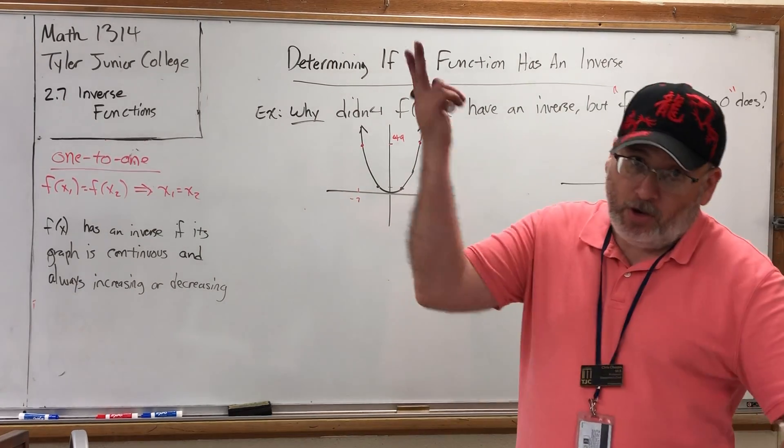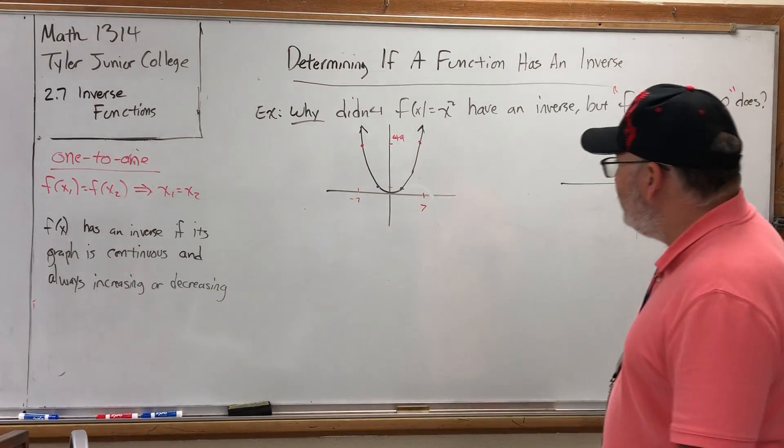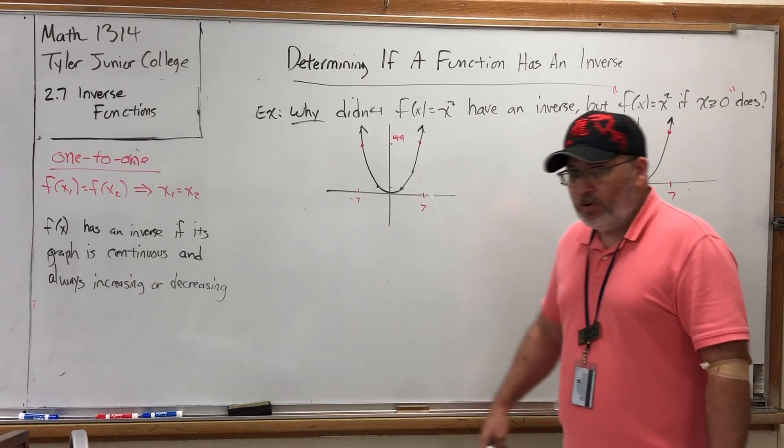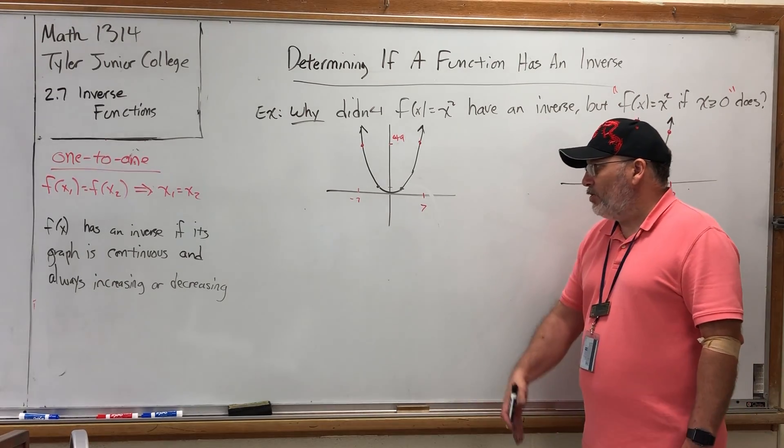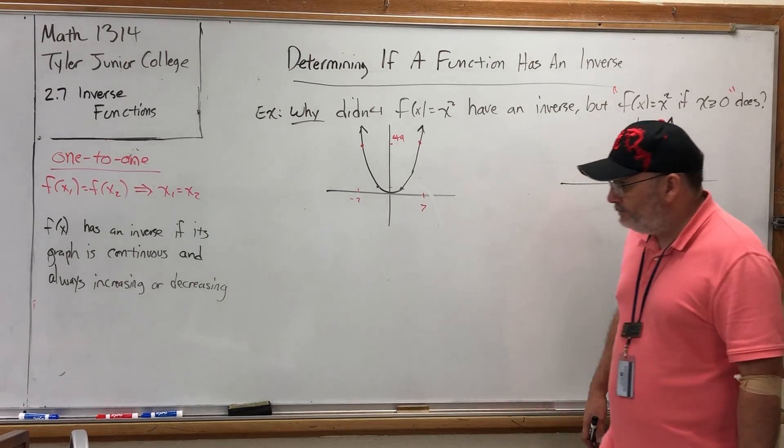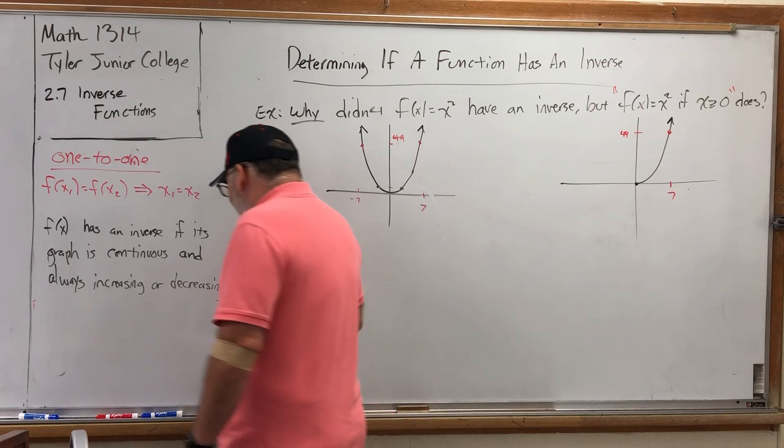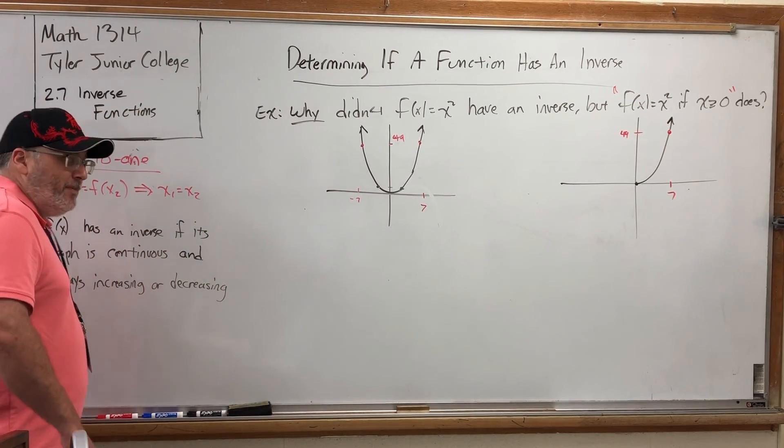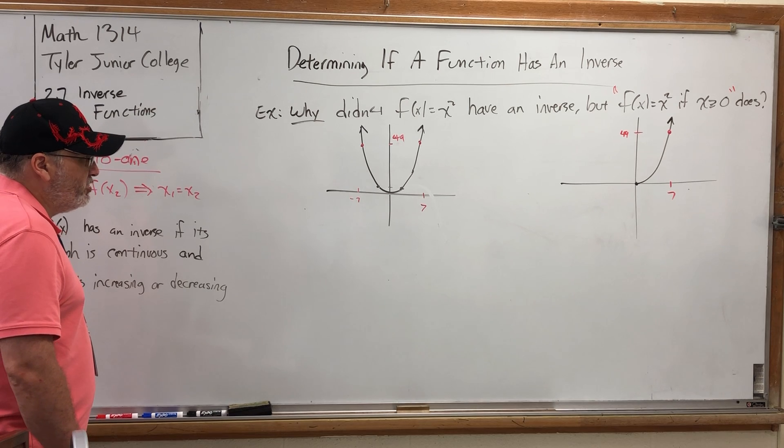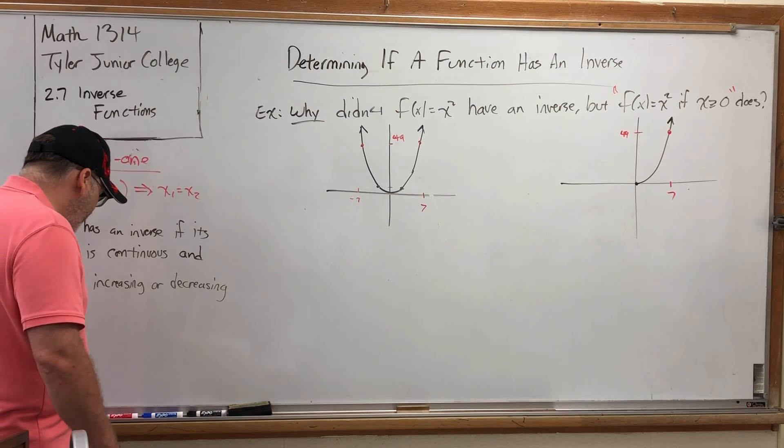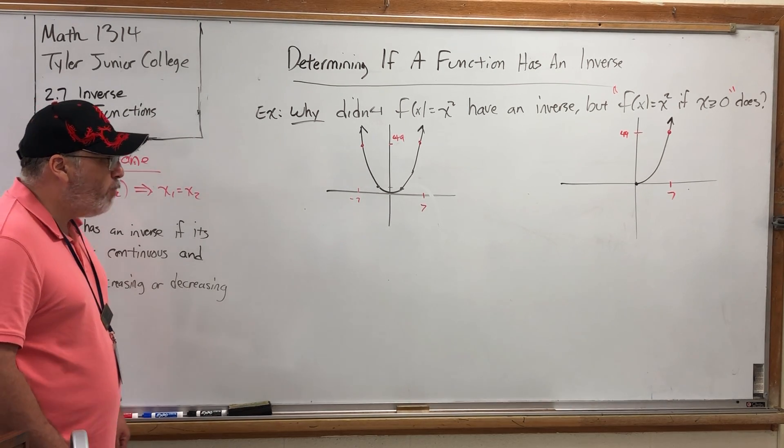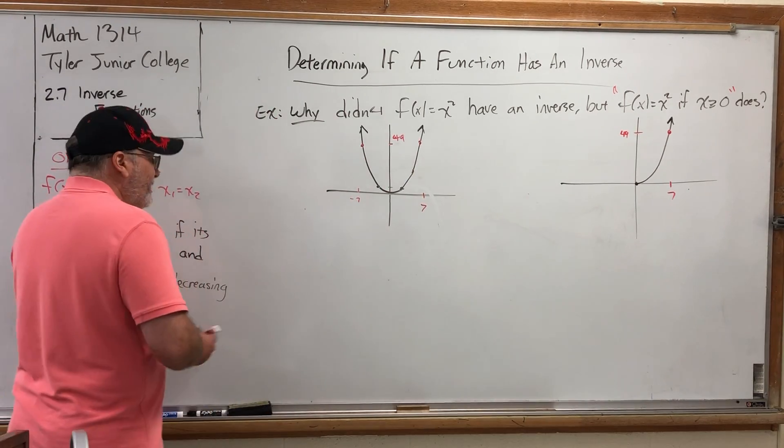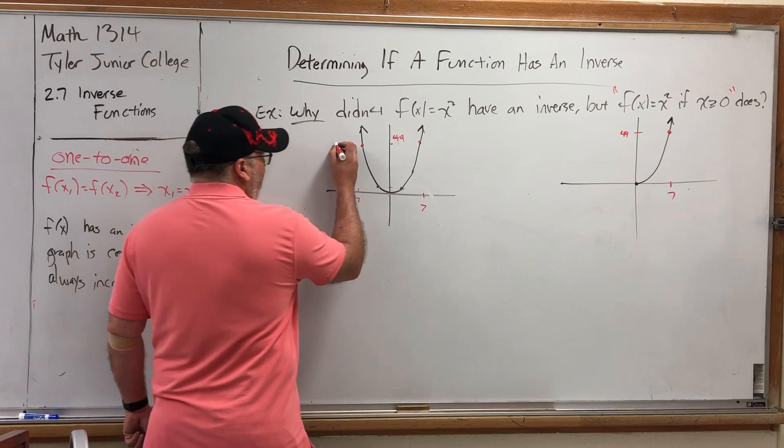There is an adjective for a graph that is always going in one direction vertically. It's called monotone. Always going up or always going down. So that's another way to answer if you have an inverse. Your graph is continuous, it's not broken into multiple pieces, and it's continually going up or continually going down. But even that's not the way that I'm going to hold my students accountable for who are currently taking my college algebra class.